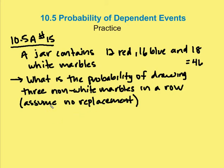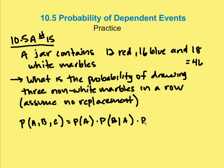So the probability of drawing, let's set up our equation here. The probability of A, B, and C is equal to the probability of A times the probability of B given A times the probability of C given A and B.